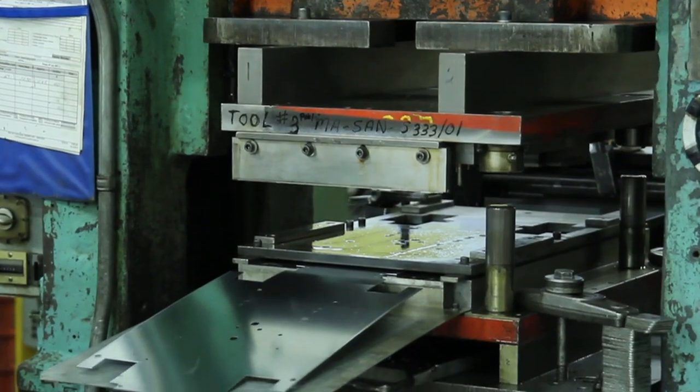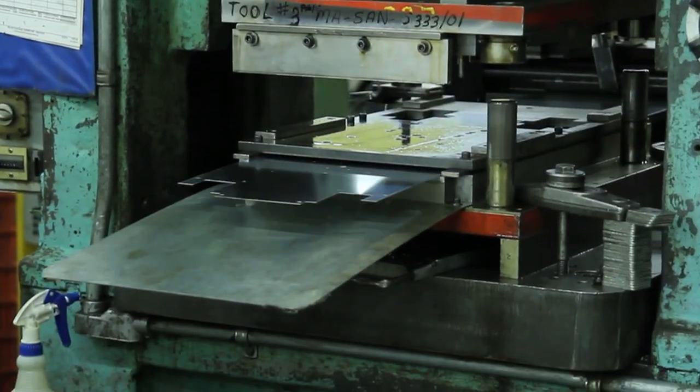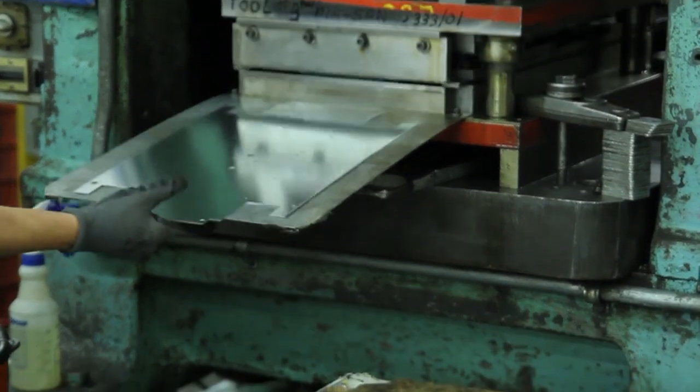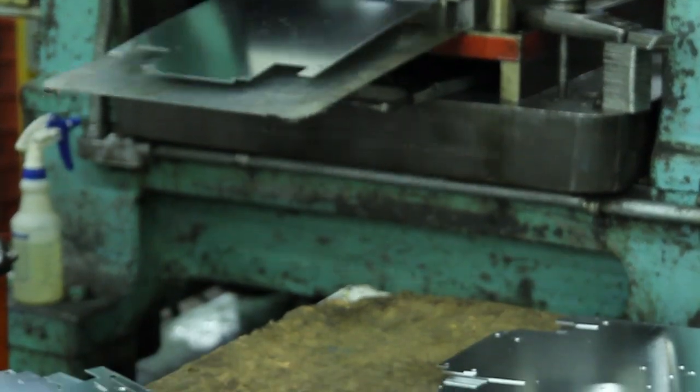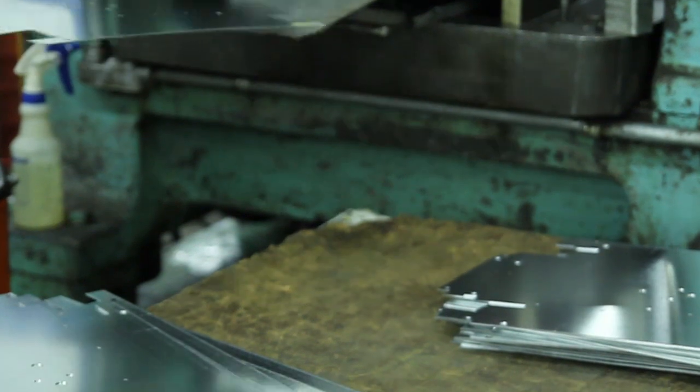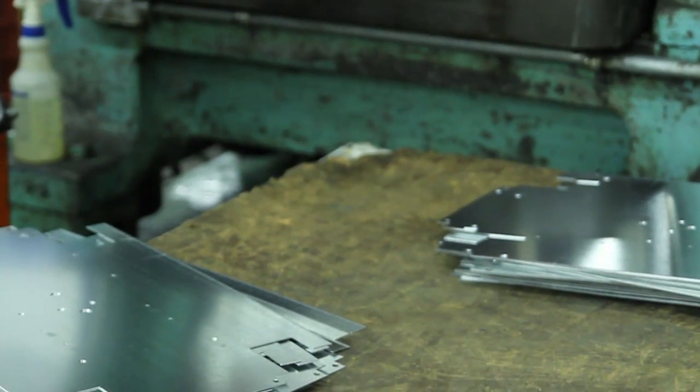Laser cut parts that require bending are done typically on a press brake. We have many progressive dies that blank out the part but don't do the bending because volumes would not justify such a complex die. So those dies blank out the part and then they have to be bent. CNC press brake is ideal for that.